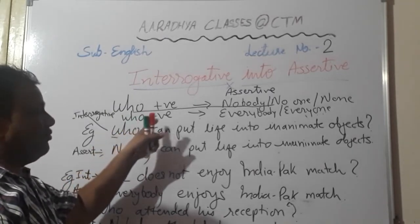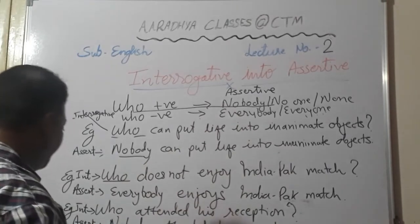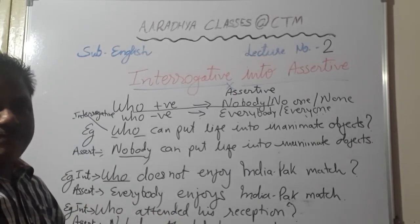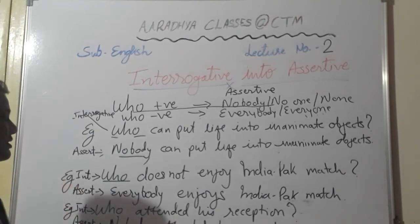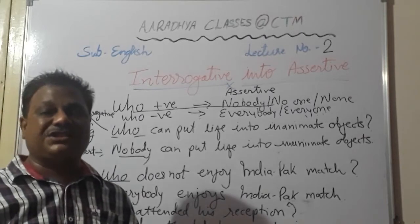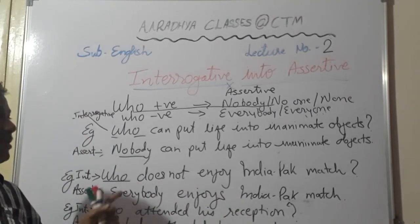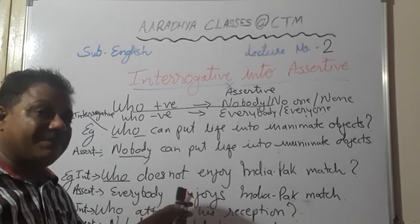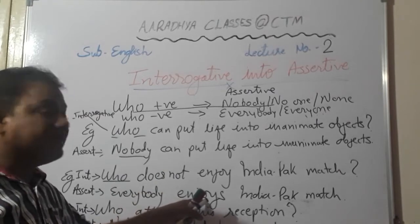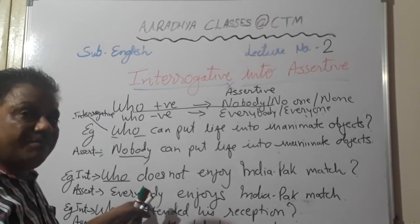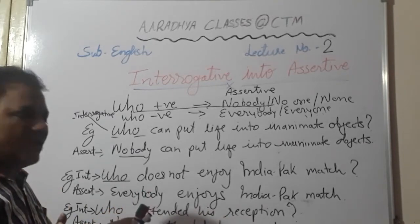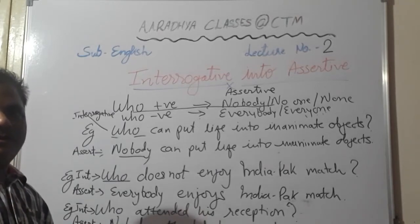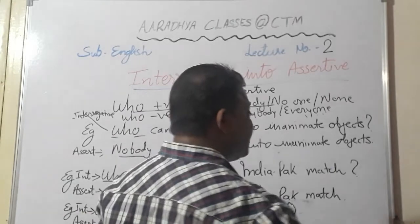You can take many more examples — for example, 'Who cannot do this sum?' means 'Everybody can do this sum.' The most important rule: do not change the tense of the given sentence. If the question is in simple present tense and you write the assertive in simple past tense, it will be wrong even if you have used nobody or everybody correctly. Whichever tense the sentence is given in, the assertive must also be in that same tense. This is a normal rule for all types of sentences.